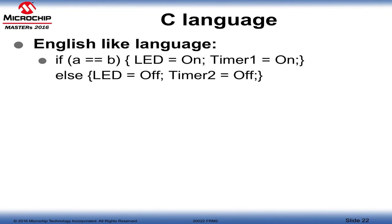C is more English-like. A simple if-then-else instruction reads very clearly: if the value in A equals the value in B, then turn on the LED and turn on timer 1. If not, turn the LED off and turn timer 2 off. Anybody can look at this and understand exactly what the person is trying to do — it's easy to understand with no ambiguity.